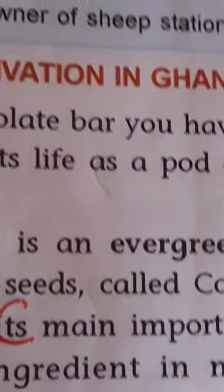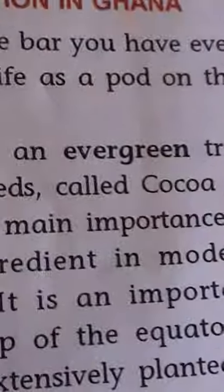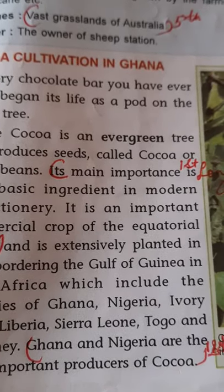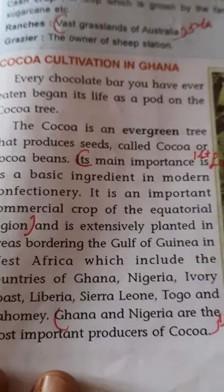Cocoa is extensively planted in the areas of the Gulf of Guinea in West Africa. The countries in this region include Ghana, Nigeria, Ivory Coast, Sierra Leone, and Togo. Ghana and Nigeria are the major producers of cocoa, both lying near the Gulf of Guinea in West Africa.